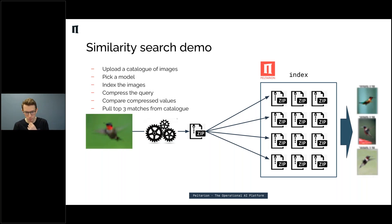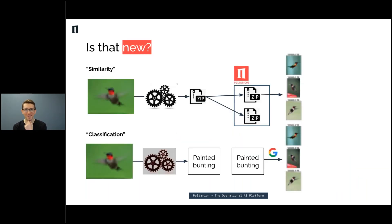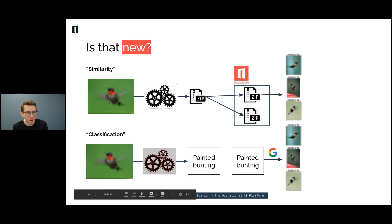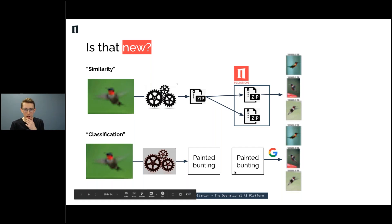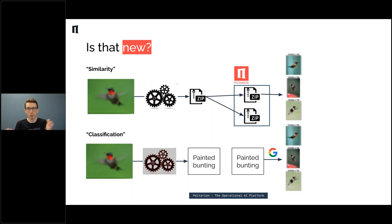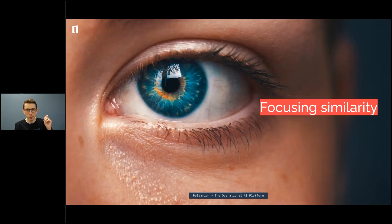Then one of the developers asked: is this really similarity? Or is it just a classification network — you take an image, classify it, say what bird species it is, then return images of that species? It's a very valid question, because as we've seen, we use classification networks in our architecture. But I think similarity does do a little bit more. And now is the time to talk about how you train these networks and in which way it's a bit different.